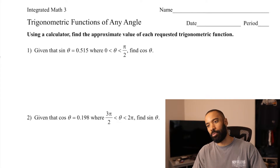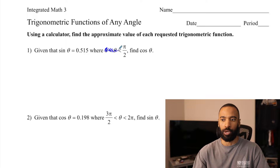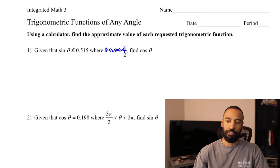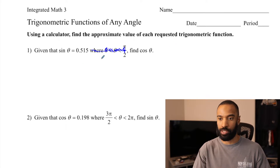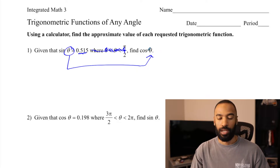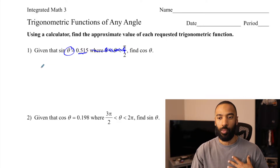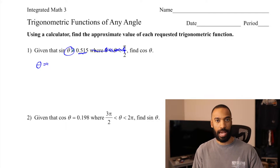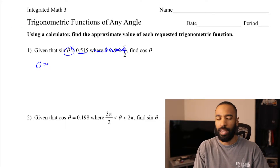Using a calculator, find the approximate value of each requested trigonometric function. If the sine of theta is 0.515, find cosine of theta. What's basically being asked of you is you've got to find out what theta is — what your angle measure is that gives you this ratio if you take the sine of it — and then use that theta on cosine. This will be approximated. I'll use the exact value obtained rather than rounding early. When we do round, let's do three decimal places.